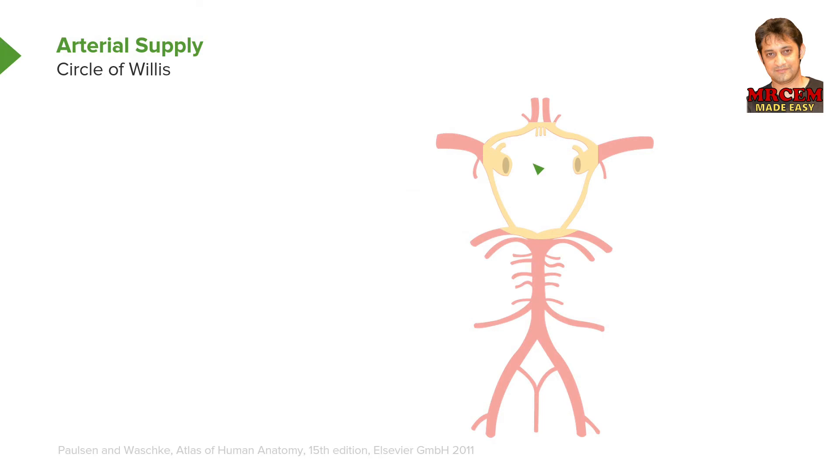The internal carotids are shown here and here. There are no branches of the internal carotid arteries until you get into the skull. And then you can start to see some of the branches here.